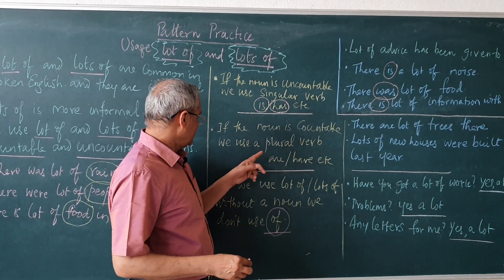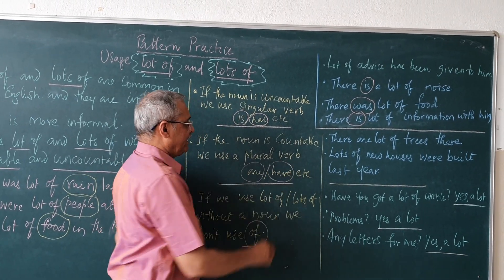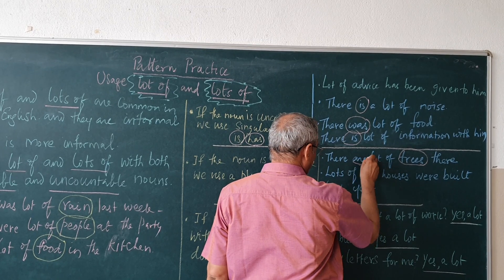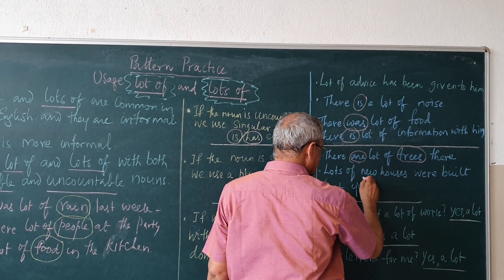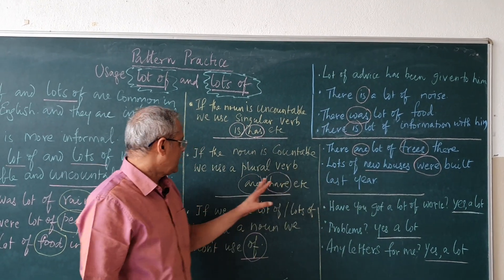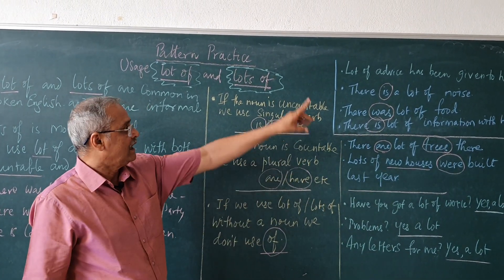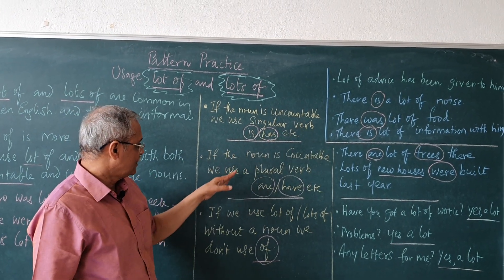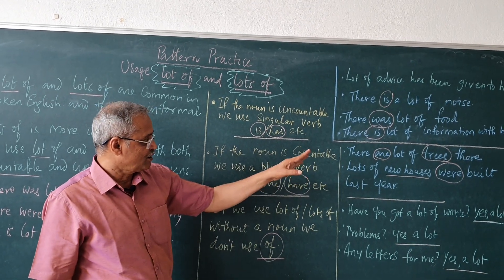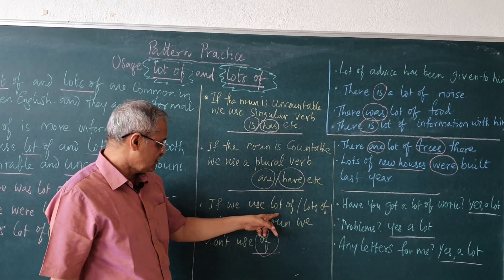You can also say: 'There is lots and lots of information' — no problem. Now the second rule: if the noun is countable, we use plural verbs — 'are' or 'have.' For example: 'There are a lot of trees' — 'trees' is countable, so we use the plural verb. 'Lots of new houses were built' — 'houses' is countable, so 'were' is used as the plural verb. So to summarize: uncountable nouns take 'is' or 'has'; countable nouns take 'are' or 'have.'